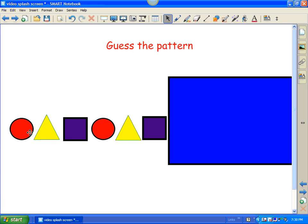these were all separate objects here. I got a circle out of the gallery and a triangle out of the gallery and a square. And then I cloned them and I made a pattern and then I grouped them all together. Then I put them behind this rectangle here and I made sure that the pattern object was behind the rectangle.